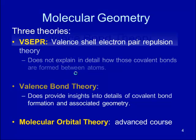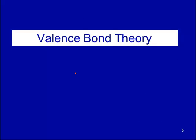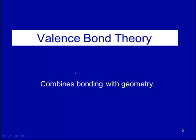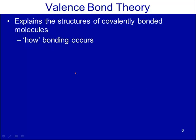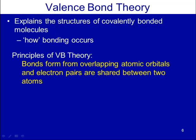Let's start talking about valence bond theory. It combines bonding with geometry. This is the theory where you get exposed to concepts about how bonds are formed and how the ultimate geometry of molecules is determined. The valence bond theory expands our understanding of structural and bonding equivalence in molecules.